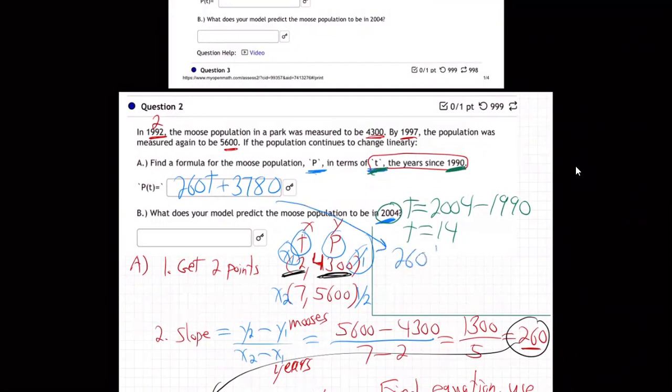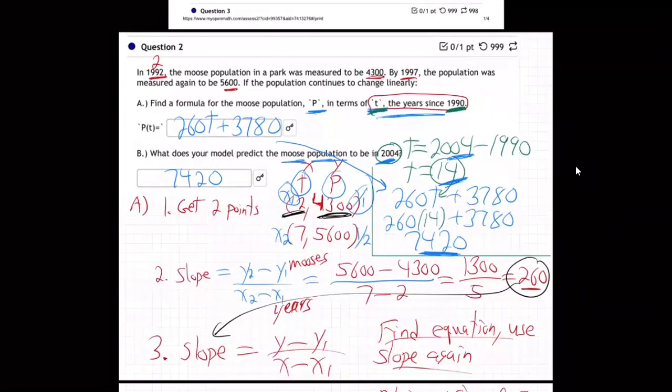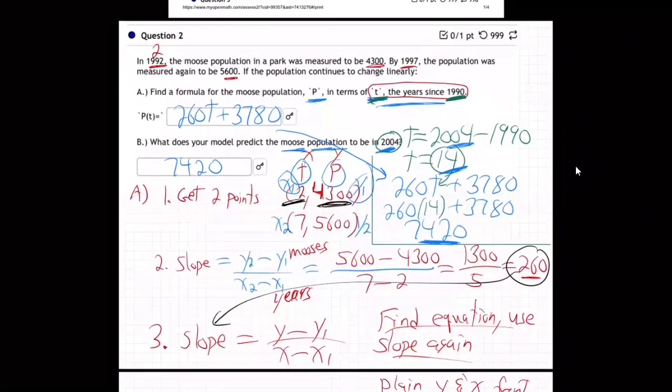And then I just need to plug that in. So now I'm just going to plug into the formula we just figured out. The 260T plus 3780. Grab that 14. Pop it in right there. Hit the buttons on your calculator. And I'm getting 7420. That is the moose population in the year 2004, by using that formula and plugging in 14 because 2004 is 14 years after 1990. So there we go.